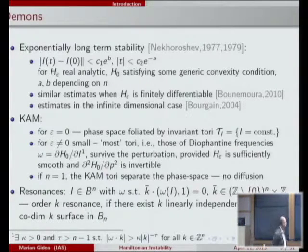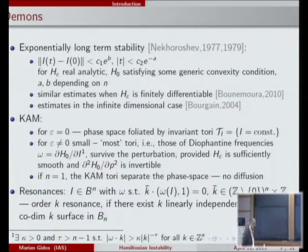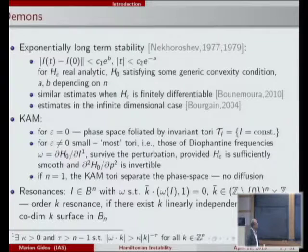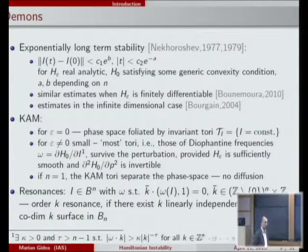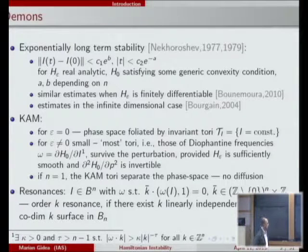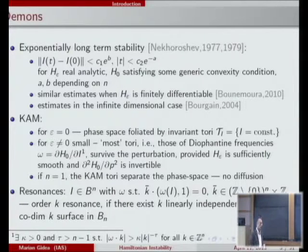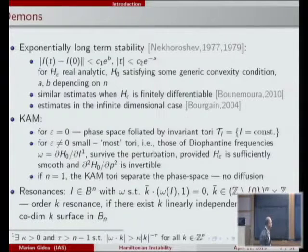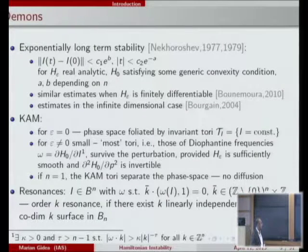When proving the existence of diffusing orbits, one has to battle several obstacles. One intrinsic problem is that diffusing orbits, if they exist, are going to be extremely slow. There are Nekoroshev estimates telling you that you can only diffuse at an exponentially slow rate.